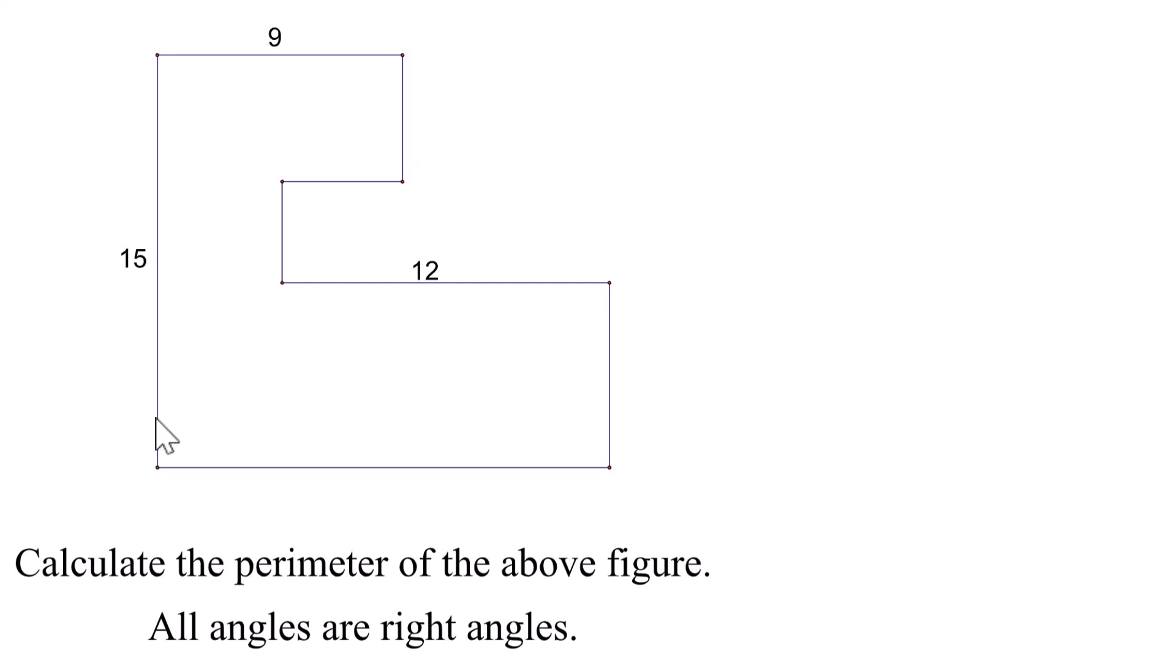So we know three particular lengths. So we've got a 9 across here, 15 down here, 12 here. We've got a whole lot of unknowns. We do know that all of the angles are right angles. And what we want to do is calculate the perimeter.